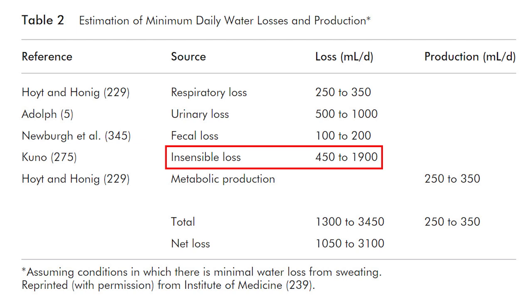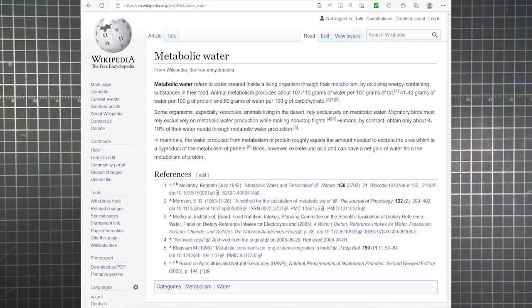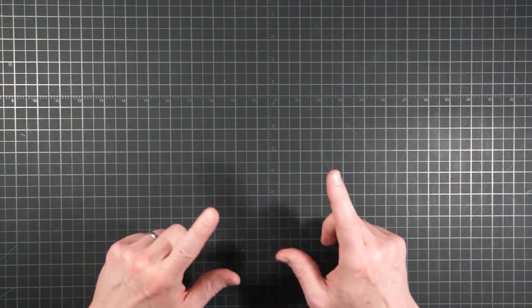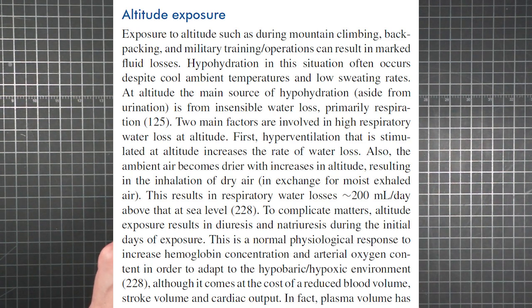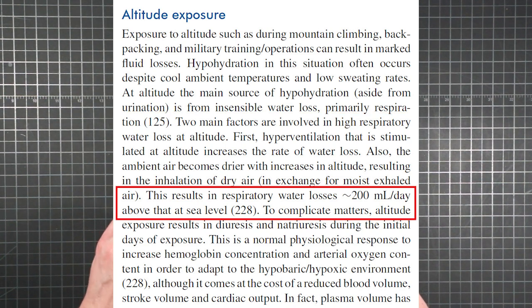Insensible loss is the water that leaves you without you realizing it. It sometimes includes respiratory loss, which in this case is broken out separately. What's left is largely water loss through your skin that isn't from visible sweat. Even when you aren't working hard and can't feel it, your porous hide is constantly evaporating H2O into the great outdoors. And according to this, that can amount for almost two liters a day in some people.